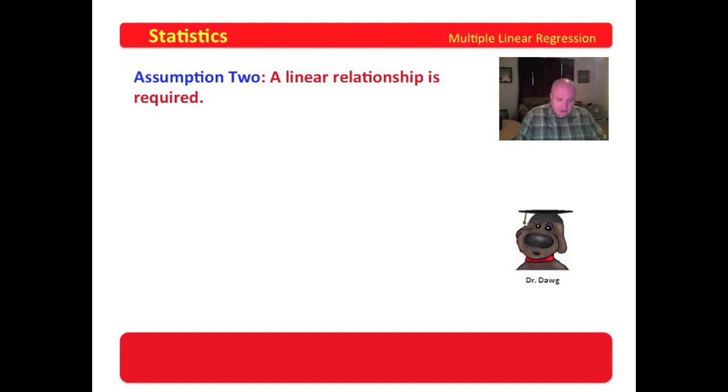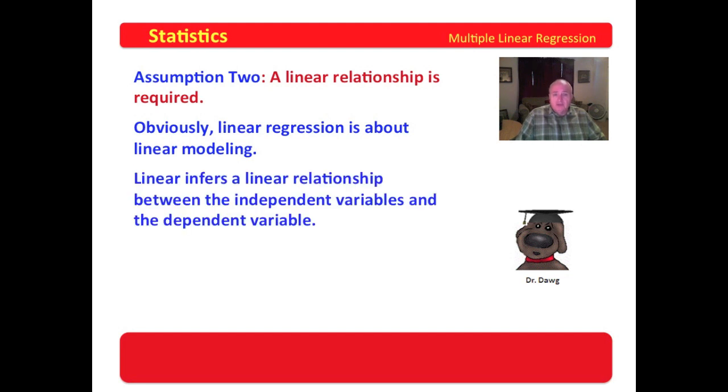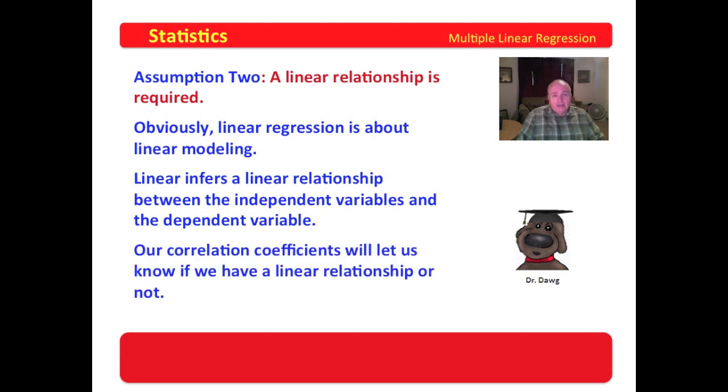Assumption two is that a linear relationship is required. Obviously, linear regression is about linear modeling. Linear infers a linear relationship between the independent variables and the dependent variables. That just goes without saying. Now, one of the neat things is that our correlation coefficients will let us know if we have a linear relationship or not. If you recall, the Pearson R tells us if we have a linear relationship. That's what it examines, linear correlation. So the Pearson R is going to continue to be important.